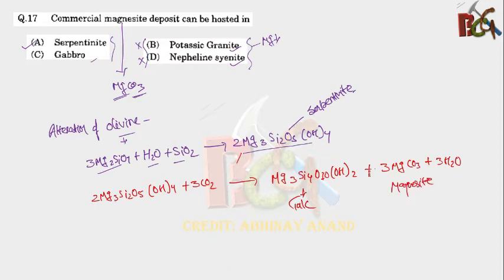And when this serpentinite... so this is the sequence of formation of magnesite. When olivine reacts with H2O plus SiO2, it will give rise to the serpentinite. When serpentinite reacts with carbon dioxide, it will give rise to talc and magnesite. So our obvious answer is serpentinite. Basically, magnesite is formed either in irregular bands in the fracture or shear zone of serpentine or ultra-basic rock. Now remember that magnesite is always with ultra-basic rock. And what is gabbro? This is basic rock.